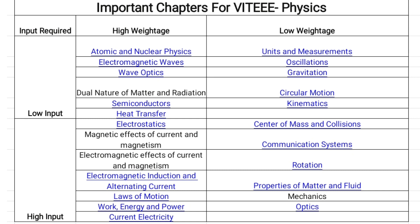Tough topics with more weightage in Physics include: electrostatics, magnetic effect of current and magnetism, electromagnetic induction, alternating current, laws of motion, work energy and power, and current electricity. Their weightage is more and you will have to learn more. High input but lower weightage topics include: center of mass and collision, communication systems, rotational motion, properties of matter, fluid mechanics, and optics.